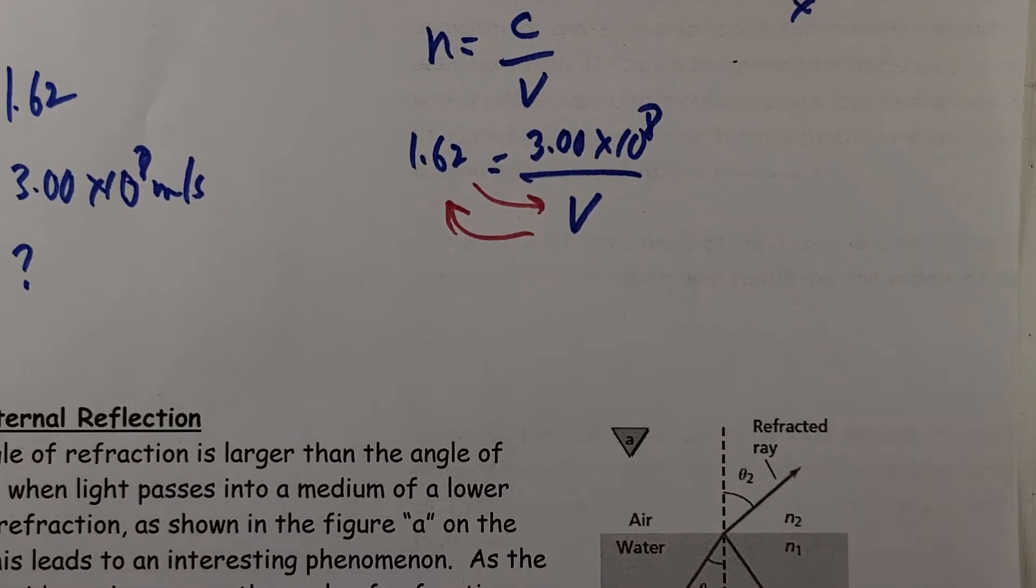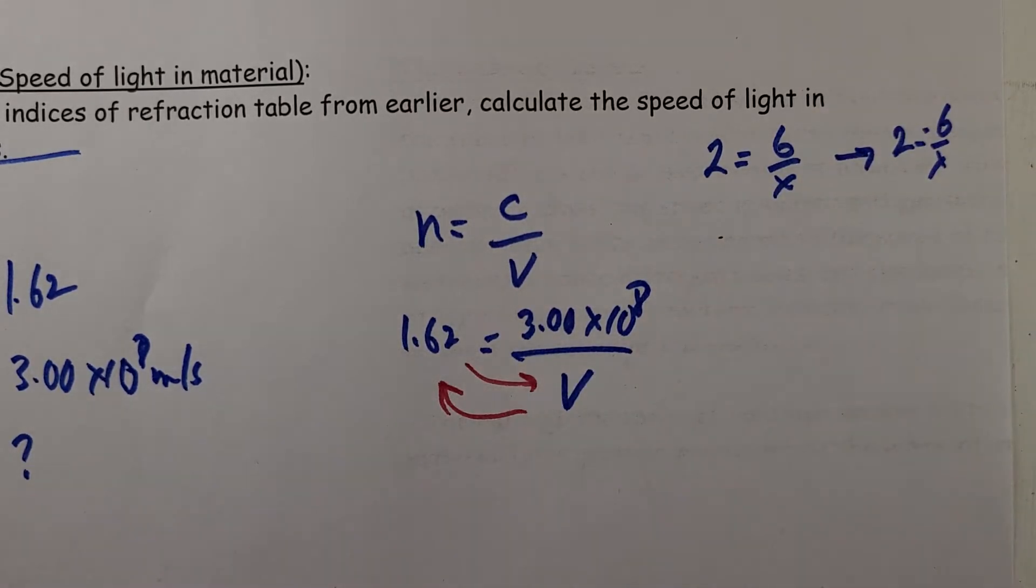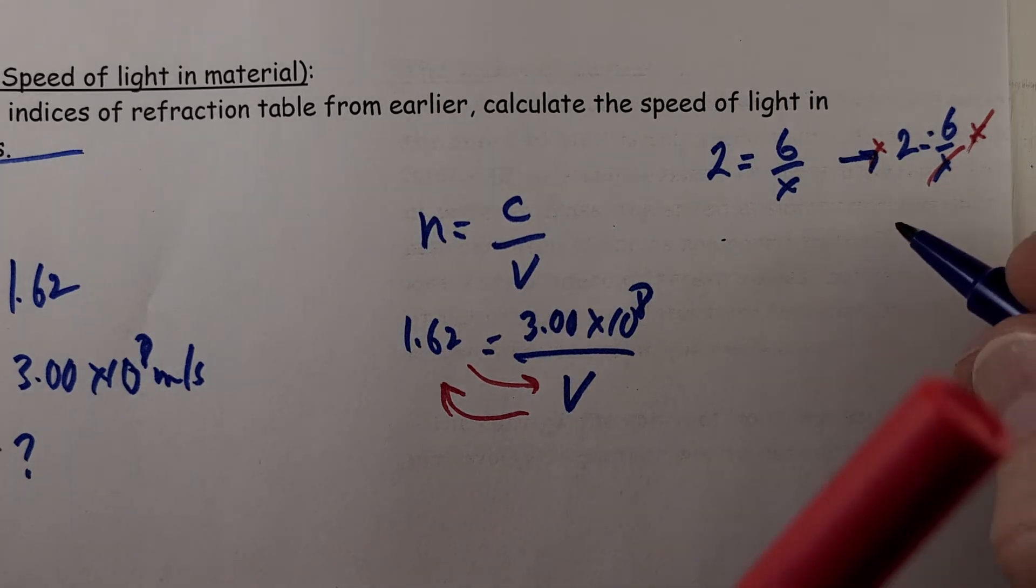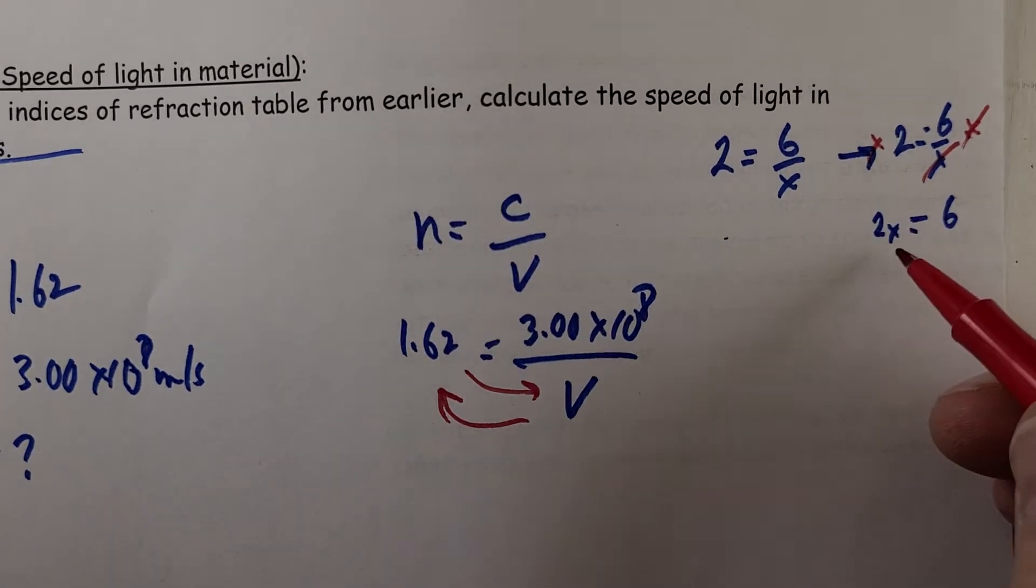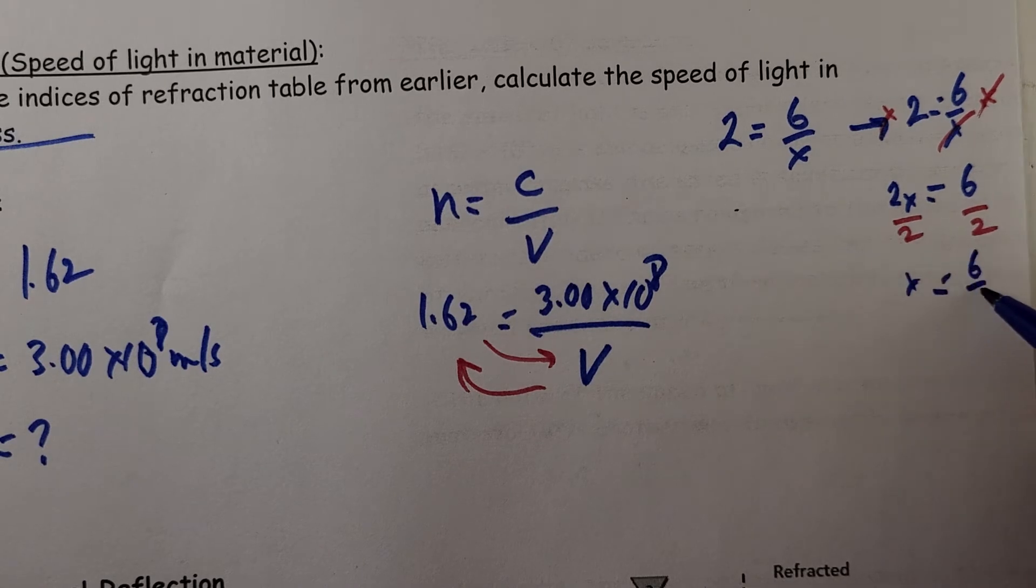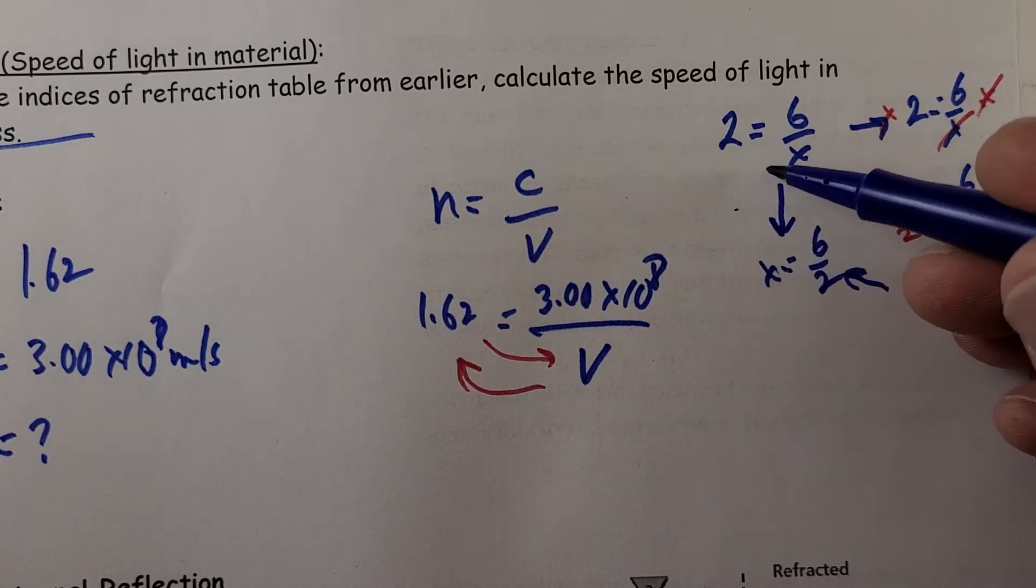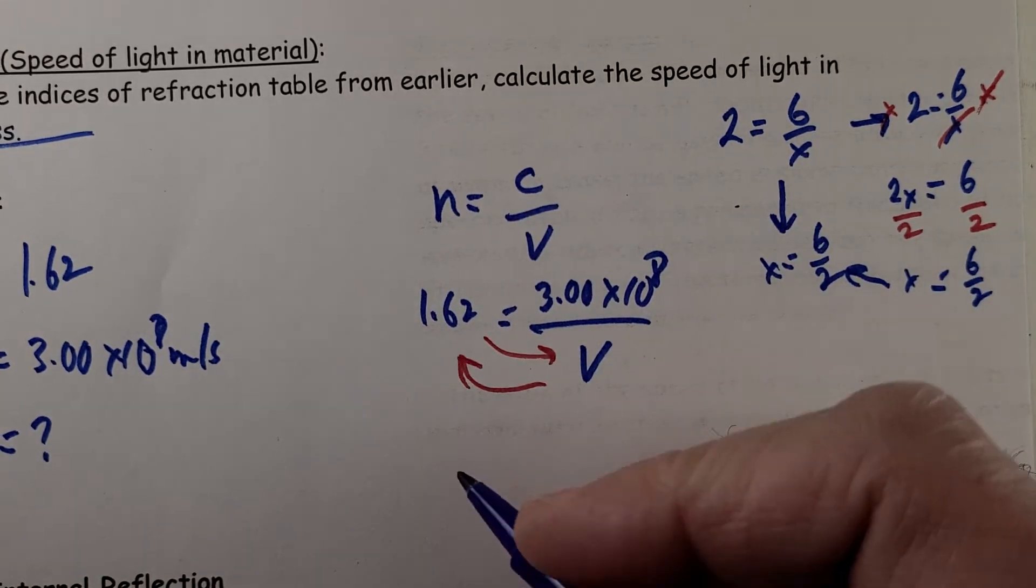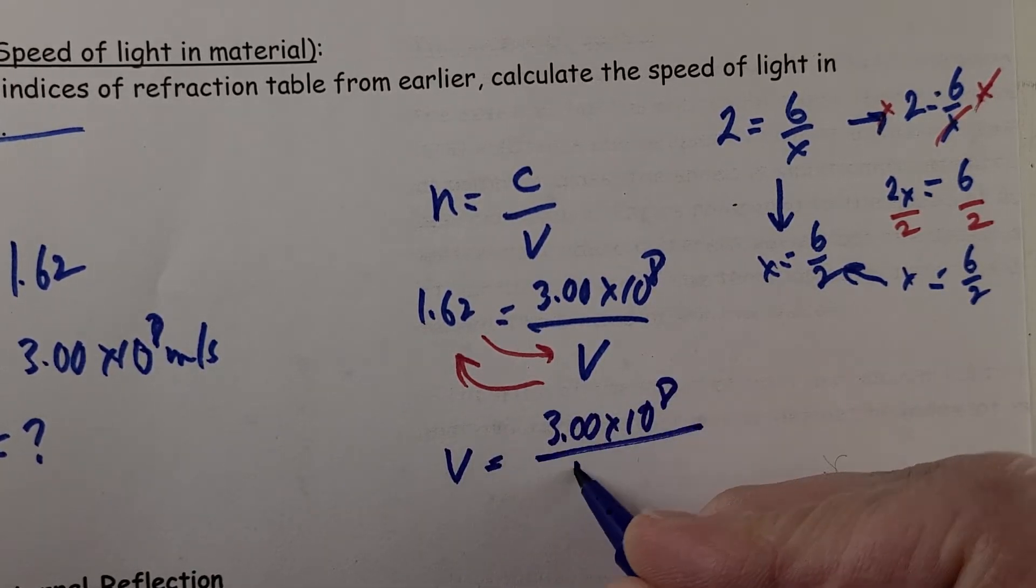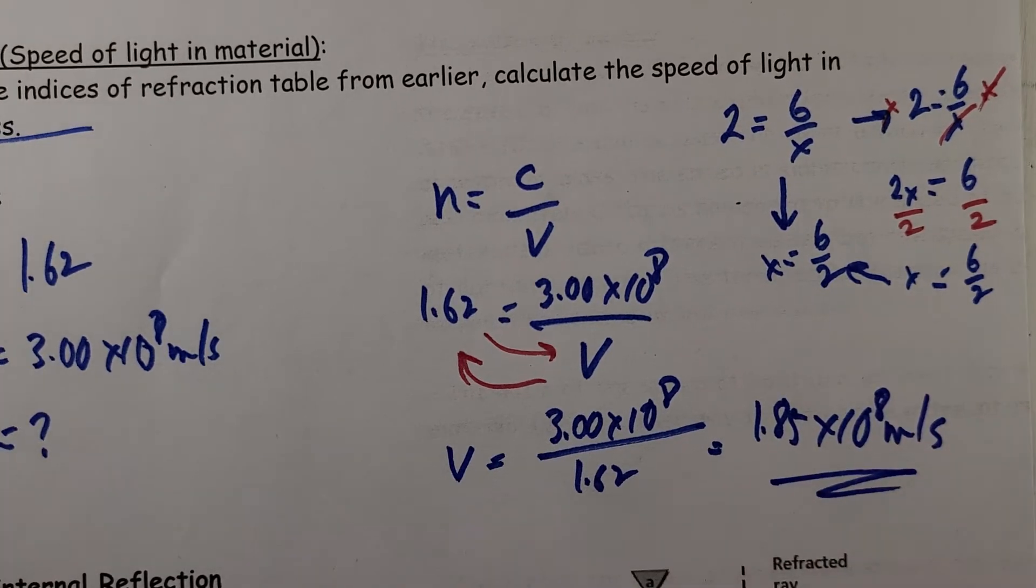So look at this shortcut: going directly from here to here, just interchange those two and it works. Here's the math that proves that it works. So V is equal to 3.00 times 10 to the 8 divided by 1.62. So when I do all that I get 1.85 times 10 to the 8 meters per second.